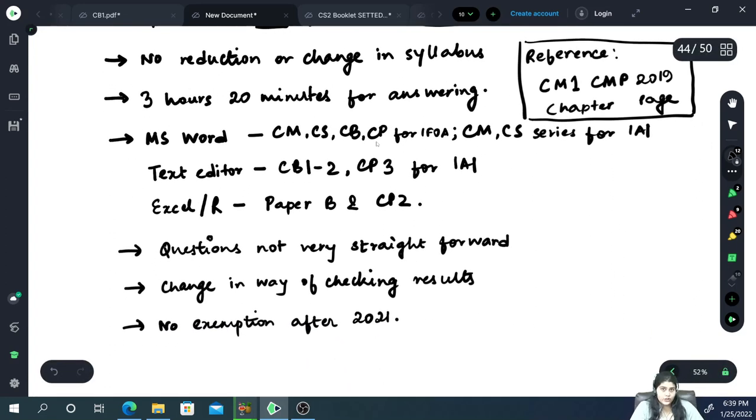One important change is the time given for answering the paper. So, when it was offline, we used to get 15 minutes as reading time and then 3 hours to write our papers. This is for most of the papers. Of course, for some papers, the timings were a little different. But the general thing was 3 hours writing time and 15 minutes reading time.